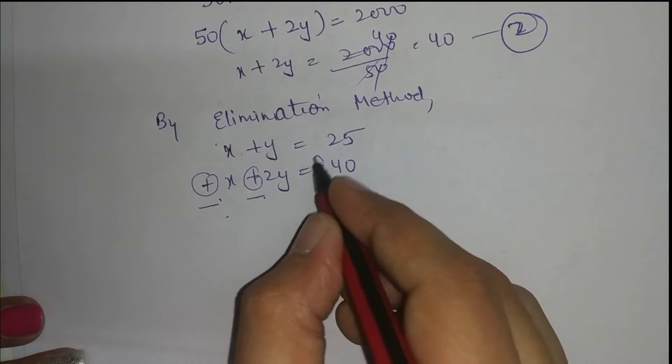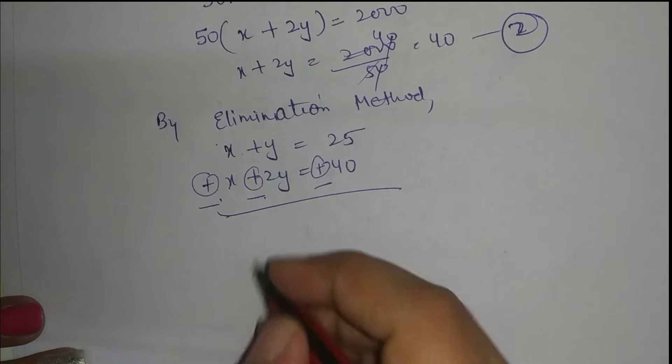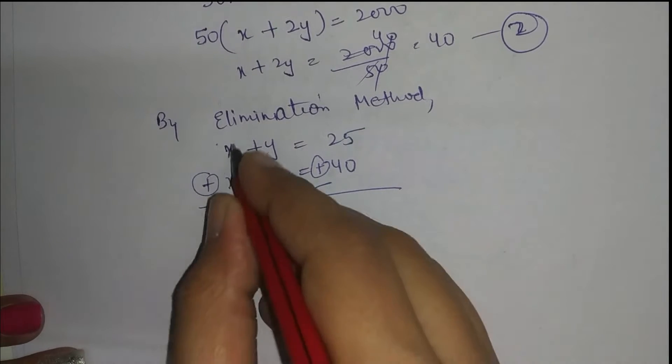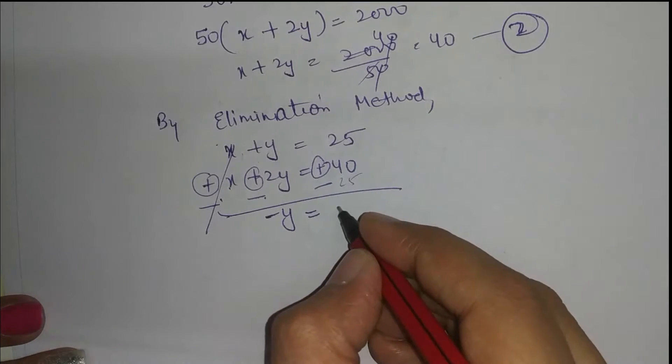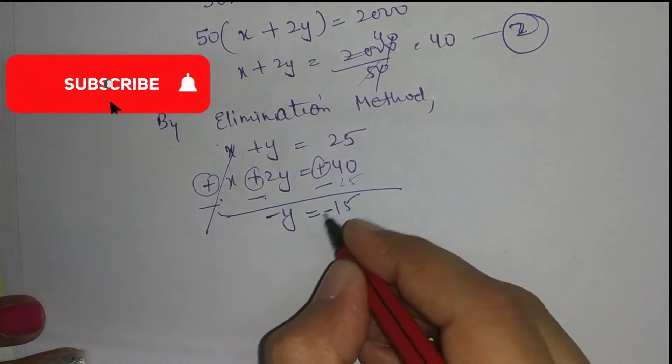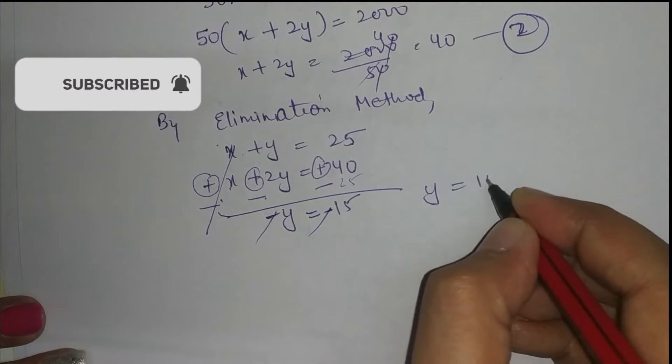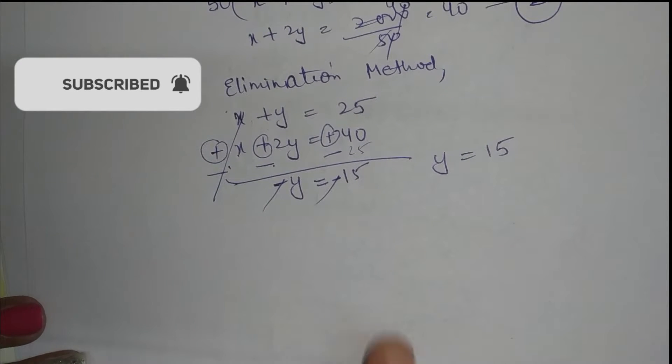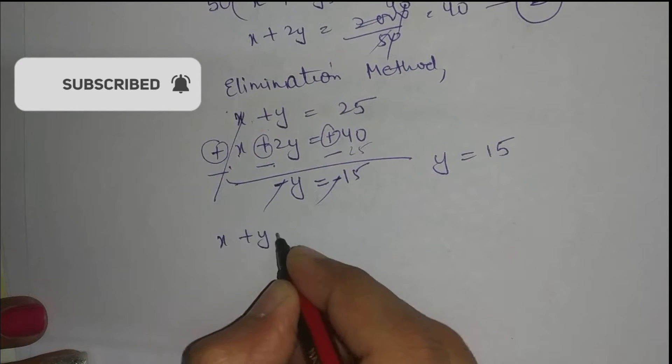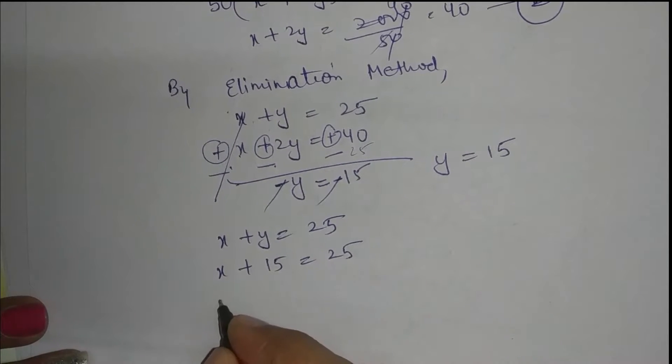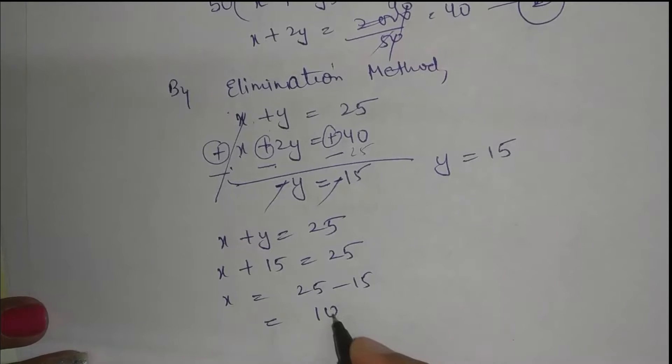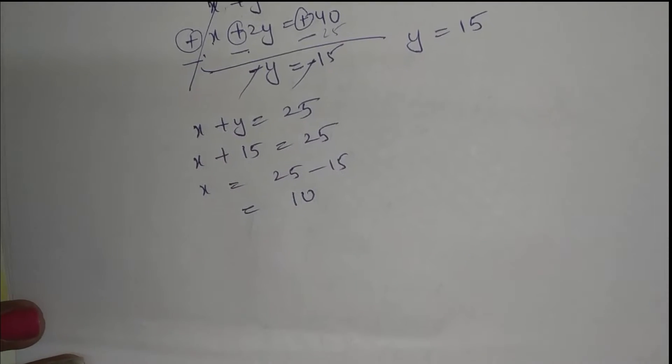To hum kya karenge? Subtract karenge. Subtract karne ke liye sign change karna padta hai. To ye ban jayega, ye cancel ho gaya minus y, aur ye ban jayega 25 minus 15. Minus minus cut gaye. To y ki value aagayi aapke paas 15. Jab y ki value aagayi to first equation mein put kar lete hai. Simple equation hai. x plus 15 is equal to 25. To x is equal to 25 minus 15, aagaya hamare paas 10.